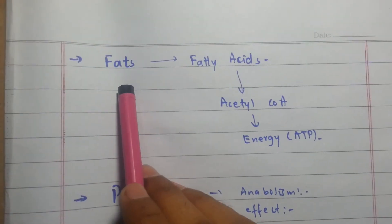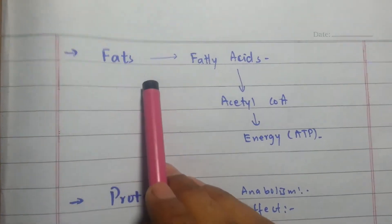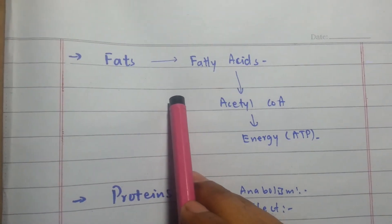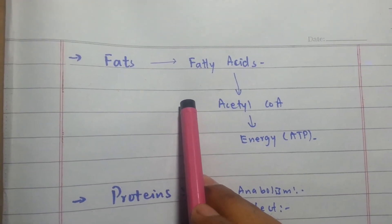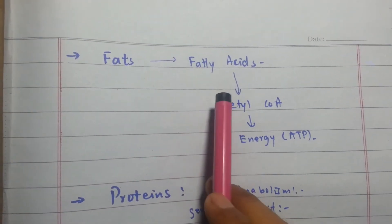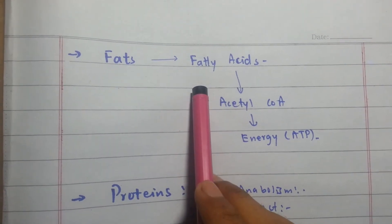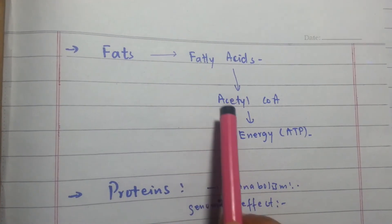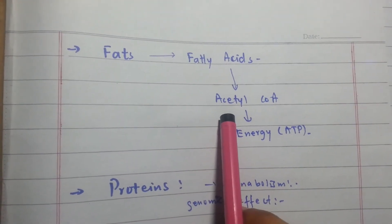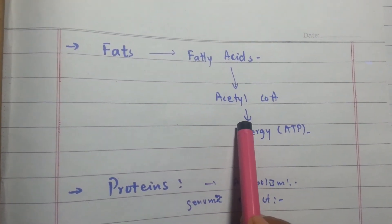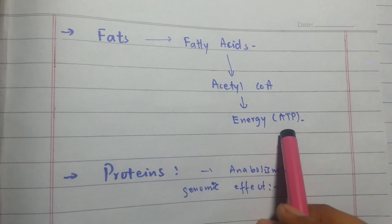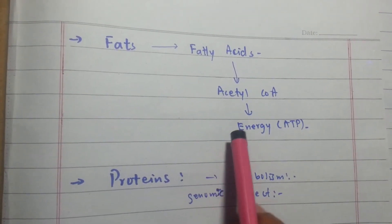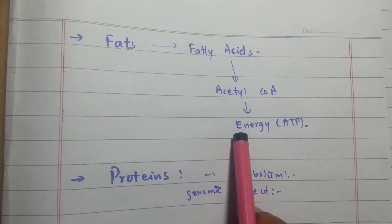Moving towards fat metabolism: fat metabolism is also activated under thyroid hormone influence. Lipolysis starts, fatty acids are released and converted into acetyl-CoA, which then provides energy in the form of ATP. This also results in increased ATP production, ultimately increasing the metabolism of the cell.